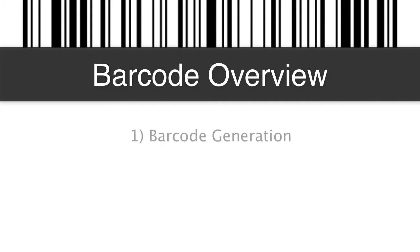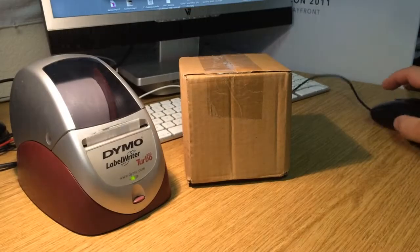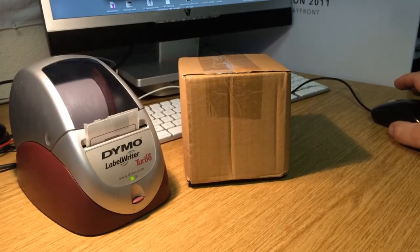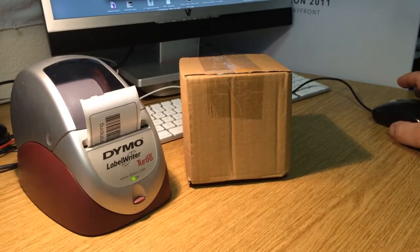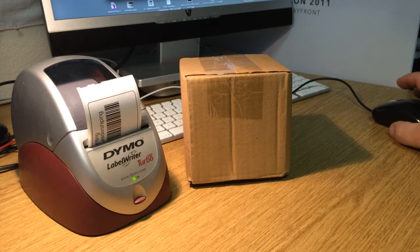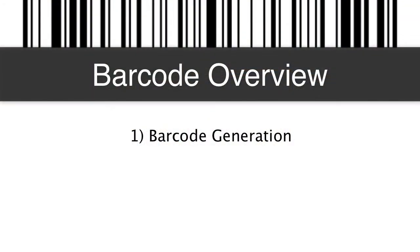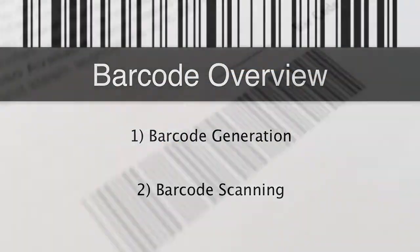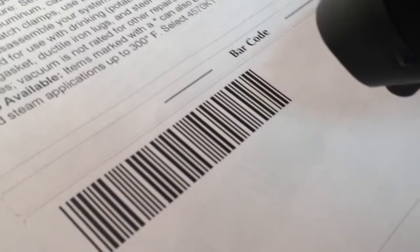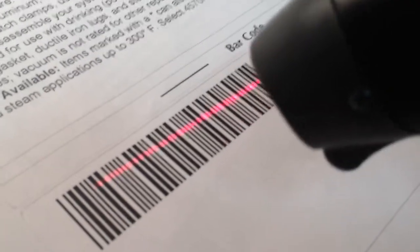First off, it's important to understand that we really have two parts of the equation here. We have the barcode printing or generation, which is where we create the barcodes and output them as labels or print them to paper. And then we have the barcode scanning. Your business needs are going to dictate the type of technology we use to deploy this with the FileMaker platform.